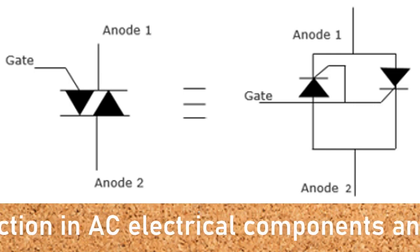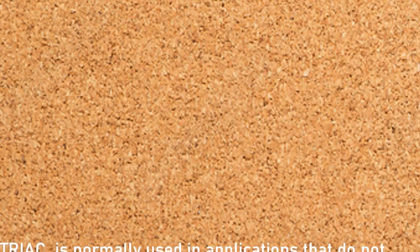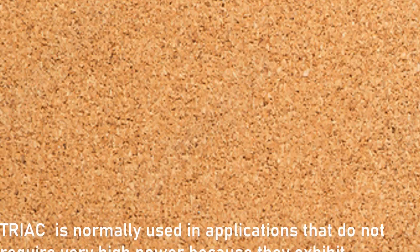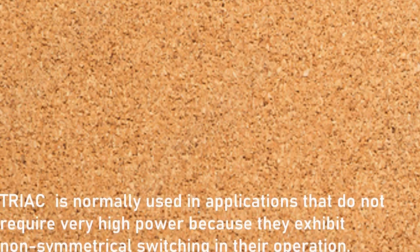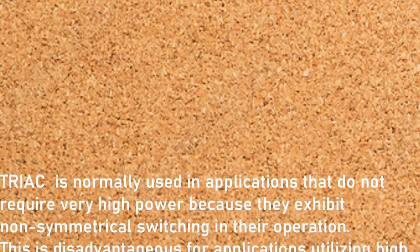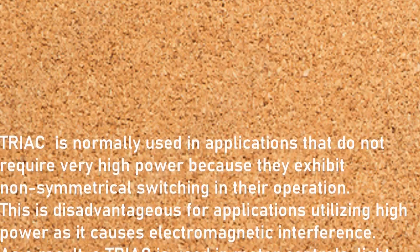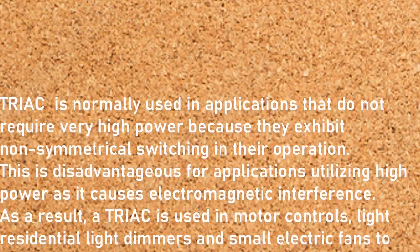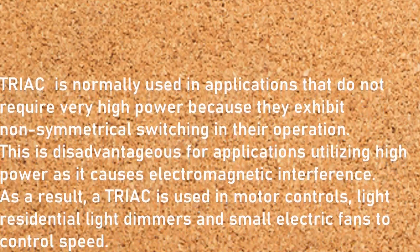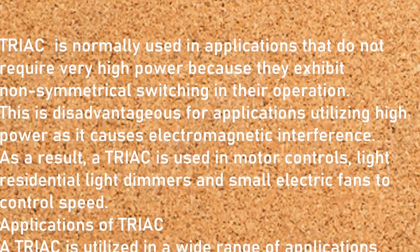It is possible to view a TRIAC in terms of two thyristors. A TRIAC is normally used in applications that do not require very high power, because they exhibit non-symmetrical switching in their operation. This is disadvantageous for applications utilizing high power as it causes electromagnetic interference. As a result, a TRIAC is used in motor controls, residential light dimmers, and small electric fans to control speed.